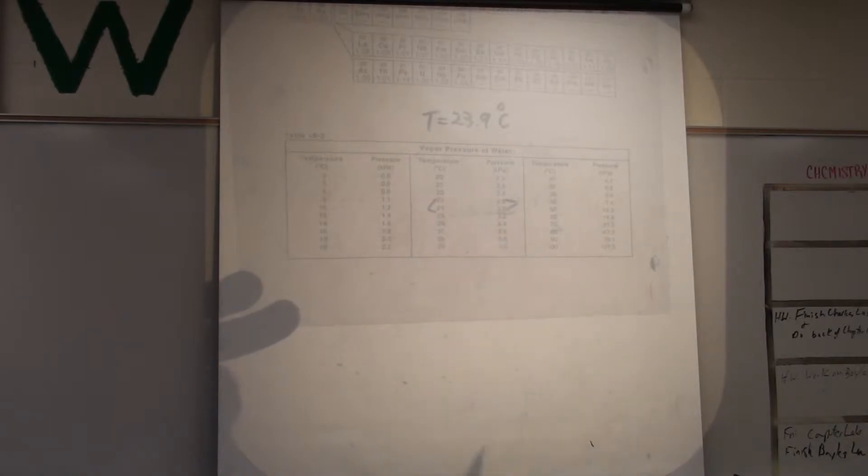If you watch the video on interpolation, you know that the first thing you got to do is calculate your slope which is the change in y over the change in x. So 3.0 minus 2.8 divided by 24 minus 23, my slope would be 0.2 kPa over 1 degrees Celsius.